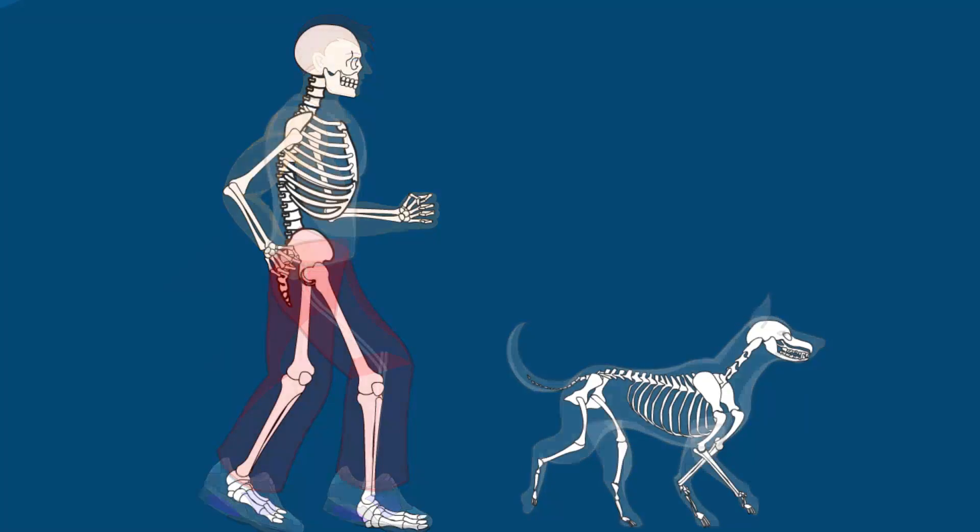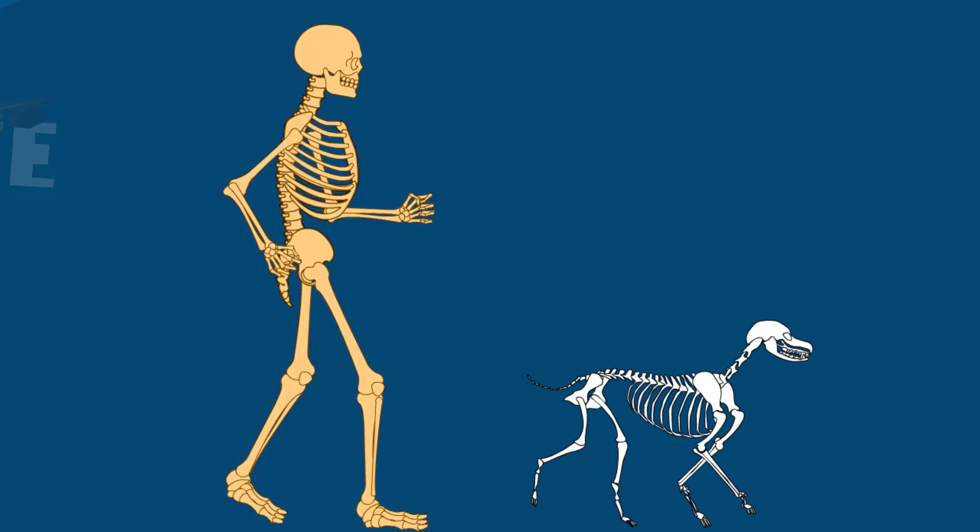Based on their shape, can you guess what kind of skeleton is shown here? This one is a human skeleton, and this one is a dog's skeleton.